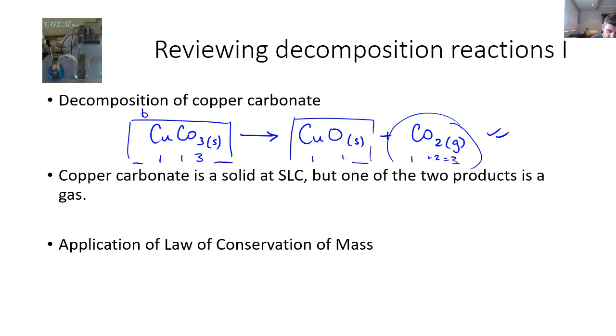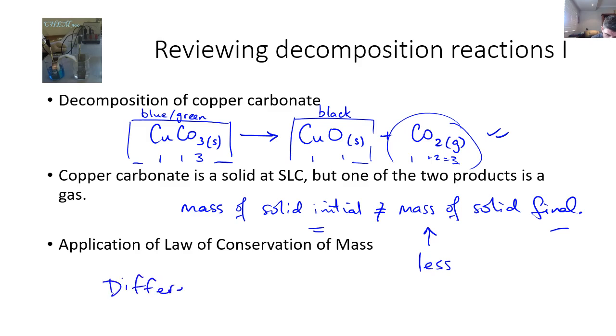Allowing for the fact that this is kind of a bluish green, blue-green powder, and this is a black powder, and therefore they clearly must be different substances, we've had a color change. The mass of solid initial is not equal to the mass of solid final. So how do we apply the law of conservation of mass in this situation?